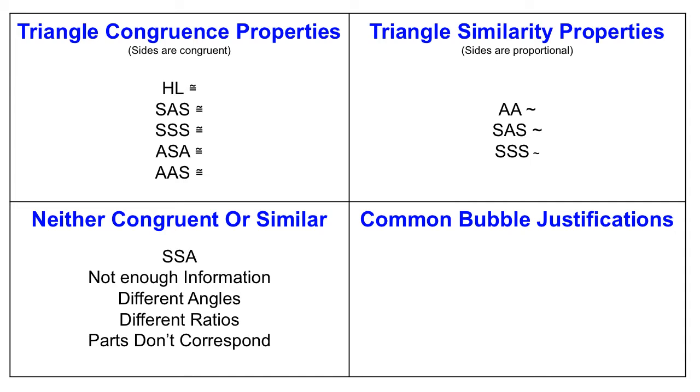The angles might be different between the two triangles. You might have different ratios for the side lengths, or it might be that the information you have just doesn't match up, doesn't correspond.